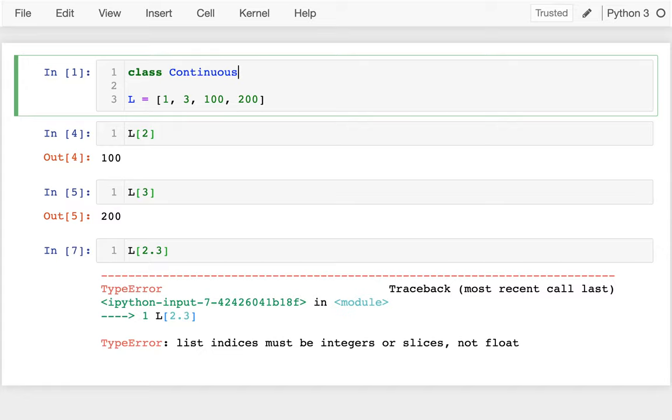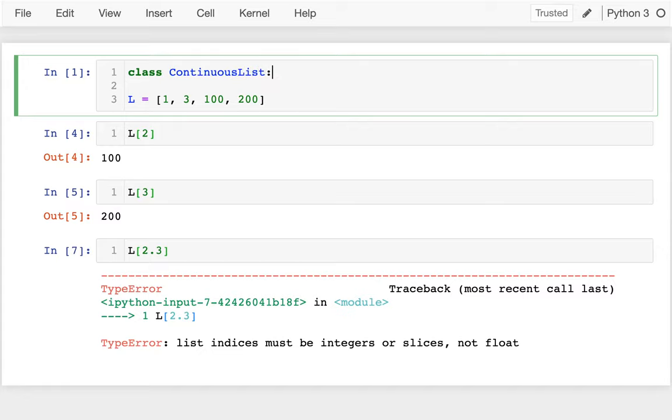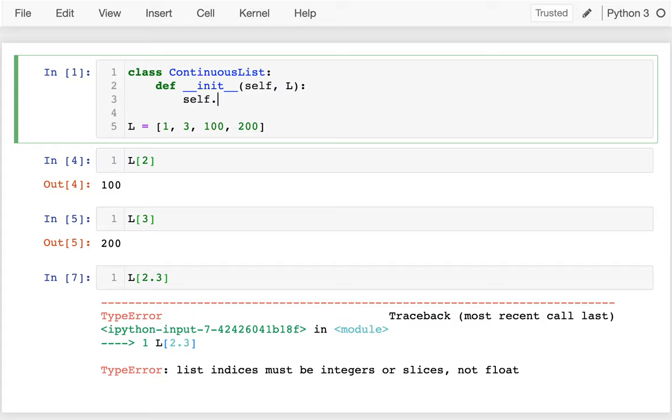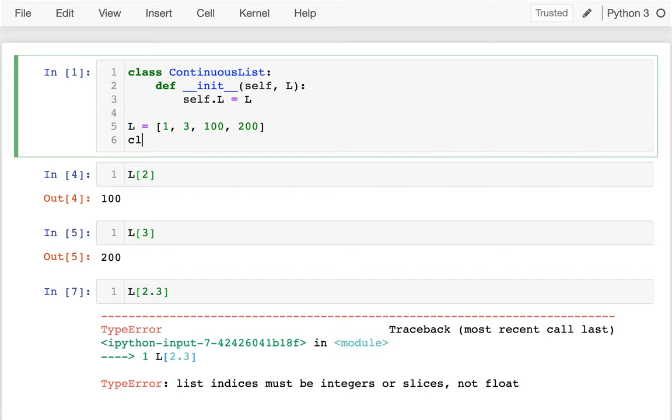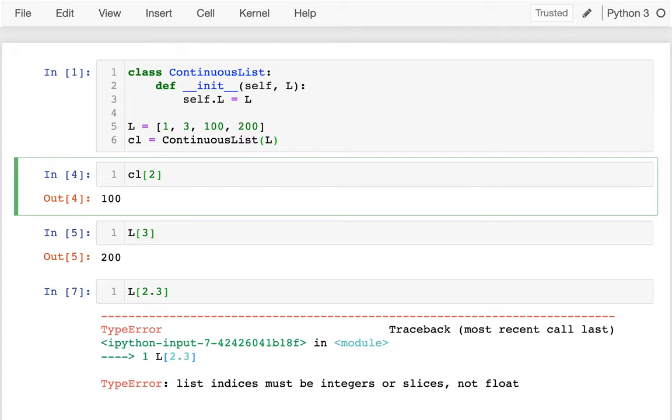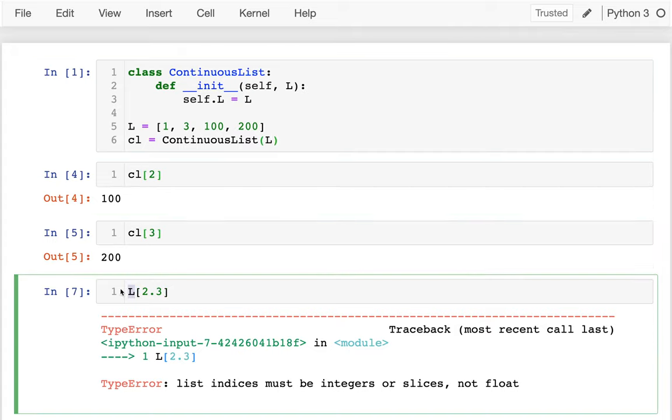A common thing that you might do is you might have a class—I'm going to call this ContinuousList—you might have a class that just wraps another data structure. So I'm going to say self.l, and by wrapping I mean that I just have an attribute inside of it that is really containing that list. So what am I going to do here? Maybe I'll say something like cl equals ContinuousList of l.